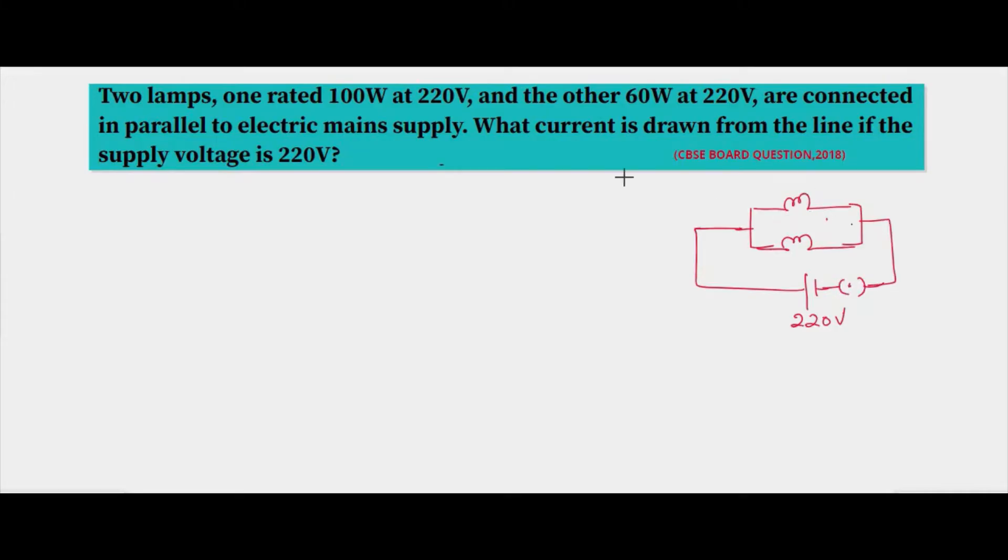What is given: the first lamp is rated 100 watt at 220 volt, so for this bulb the power P1 is 100 watt and voltage is 220 volt. The second bulb has power P2 of 60 watt and is also operating at 220 volt. Why is the voltage the same in both cases?